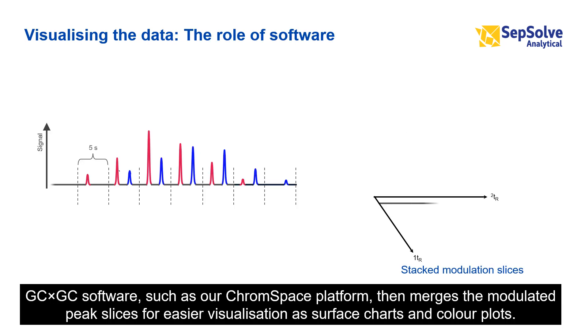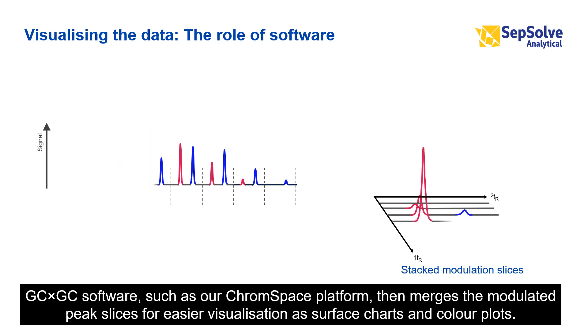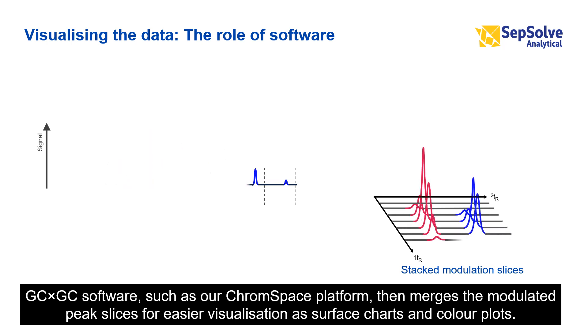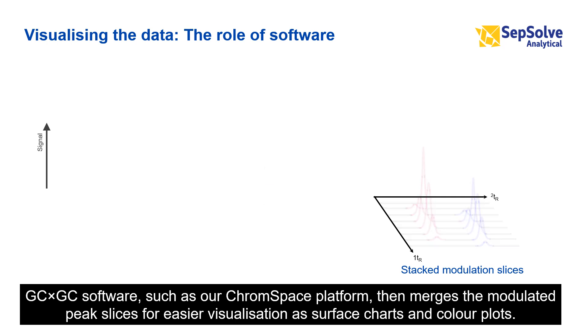GC×GC software, such as our ChromaSpace platform, then merges the modulated peak slices for easier visualisation as surface charts and colour plots.